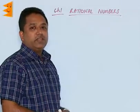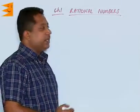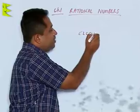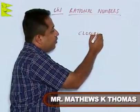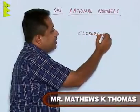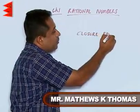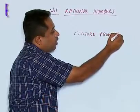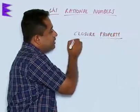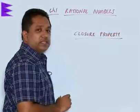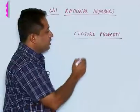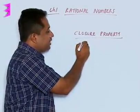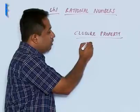Let us understand the closure property. The closure property can be verified for addition, subtraction, multiplication and division for whole numbers, for integers, for rational numbers and so on. Let us consider the closure property for whole numbers.